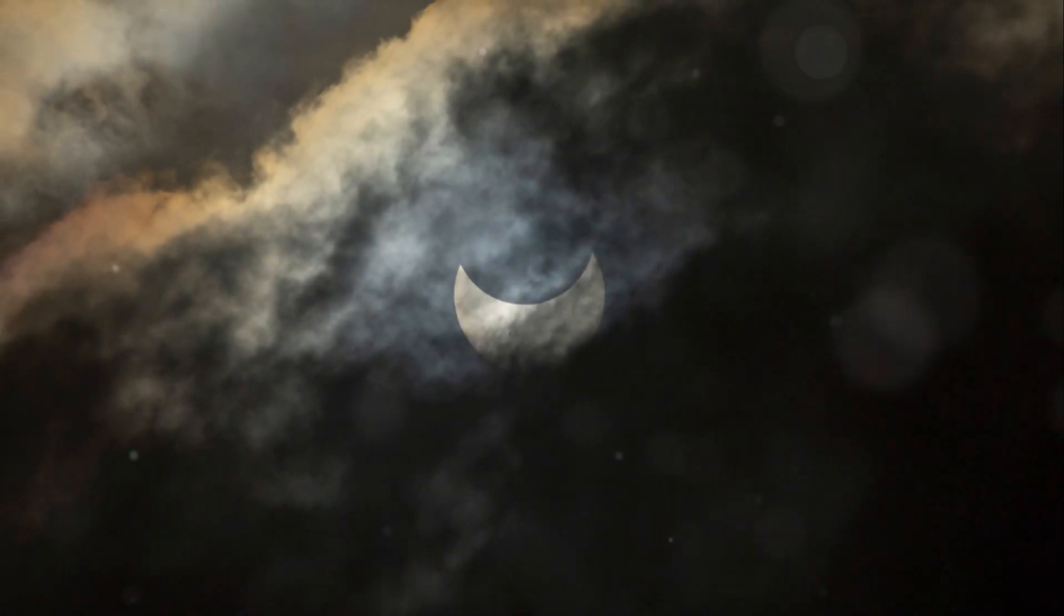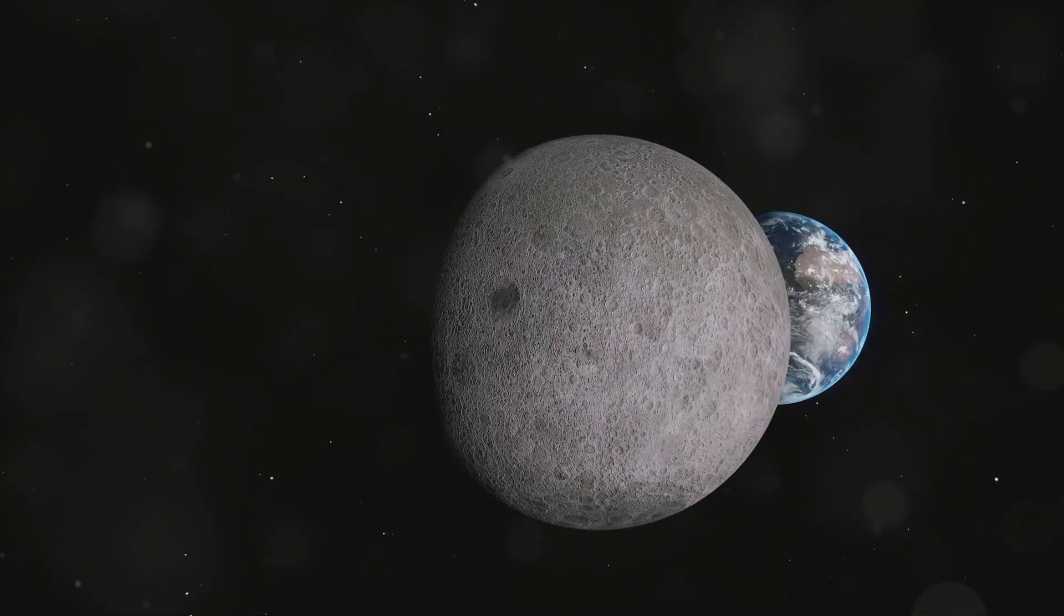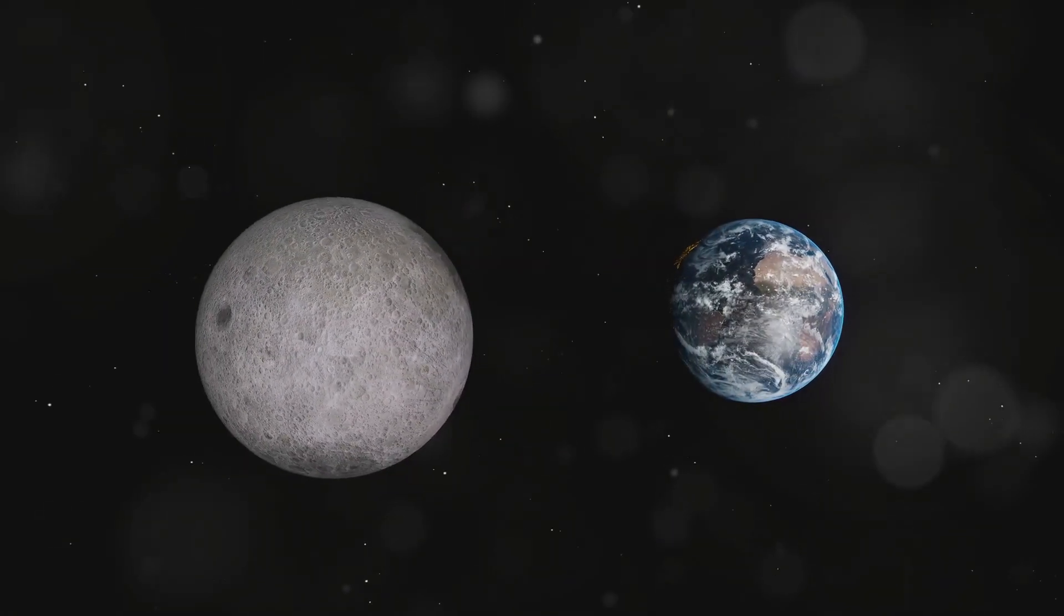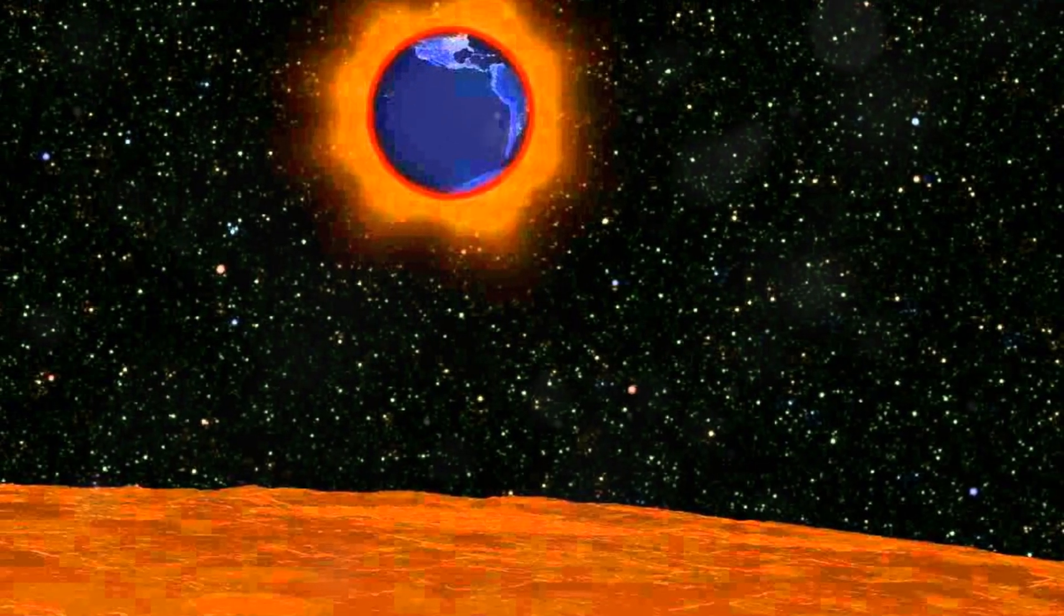Partial solar eclipse: This happens when the moon only covers part of the Sun. It's like the Sun has taken a bite out of it. The Sun appears crescent shaped and the amount of sunlight decreases, but it doesn't get completely dark. Annular solar eclipse: This type is super cool. The moon is a bit farther away from the Earth, so it appears smaller than the Sun. When it passes in front, it leaves a bright ring of sunlight around the moon. This ring is often called the ring of fire. It looks like a ring of fire in the sky.